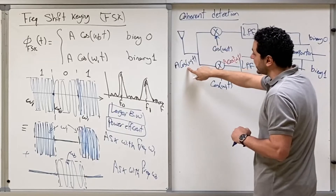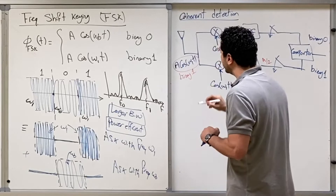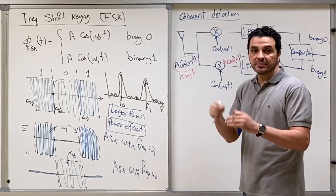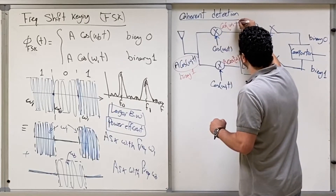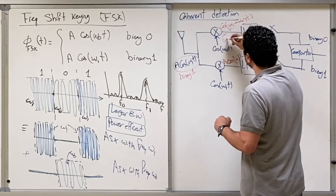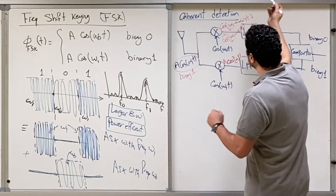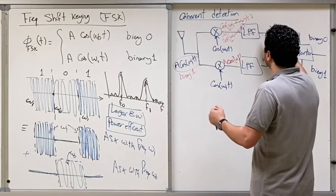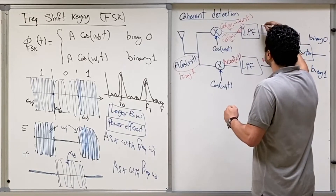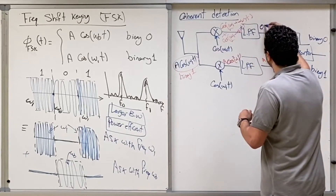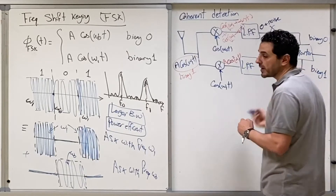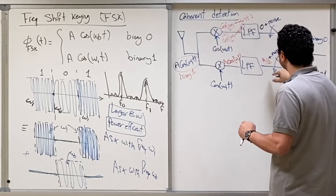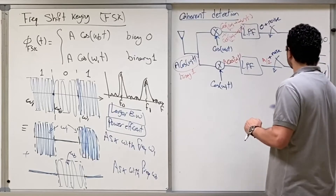When that same binary one signal goes through the other branch — cosine omega-one t multiplied by cosine omega-zero t — you get cosine of the sum and cosine of the difference: cosine(omega-one + omega-zero)t and cosine(omega-one − omega-zero)t. If omega-one and omega-zero are sufficiently different, both components will not pass through the low-pass filter. Theoretically, the output is zero; in practice, it's zero plus some noise.